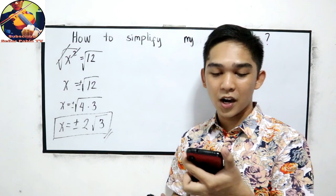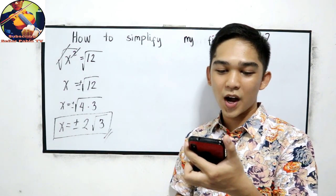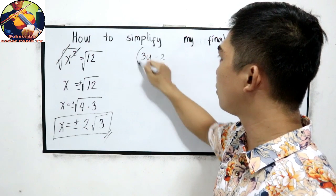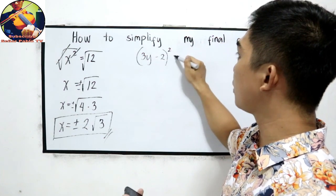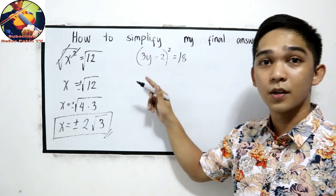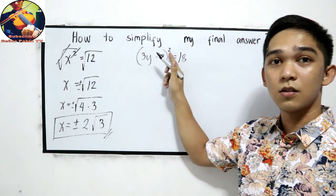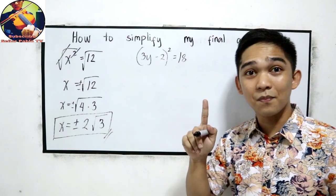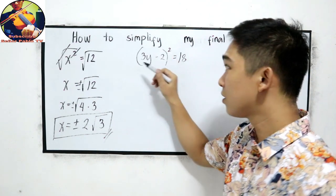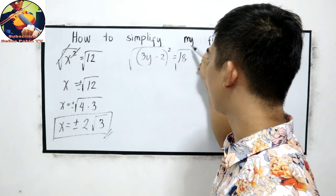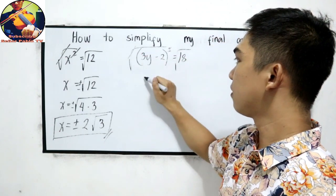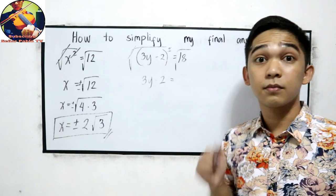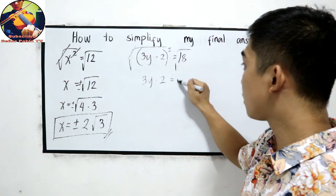Another question from YeetBoi: (3y minus 2) raised to the 2nd power is equal to 18. Our first step is to eliminate the square, so we extract the square root of both sides. The square and square root cancel out, giving us 3y minus 2 is equal to the square root of 18.